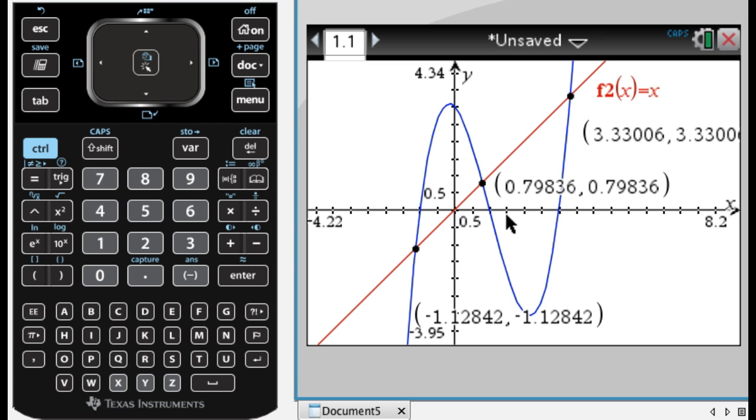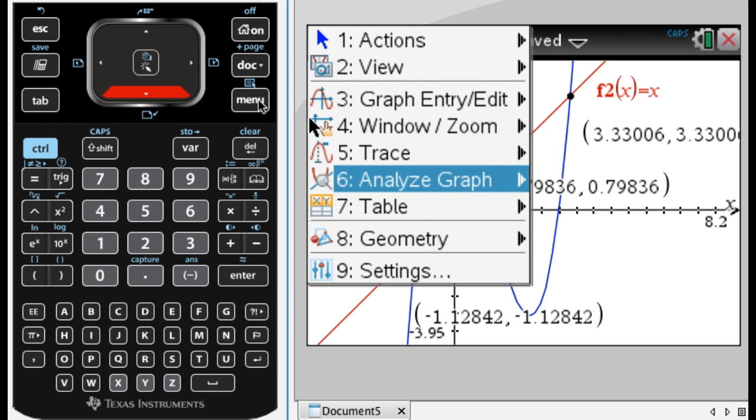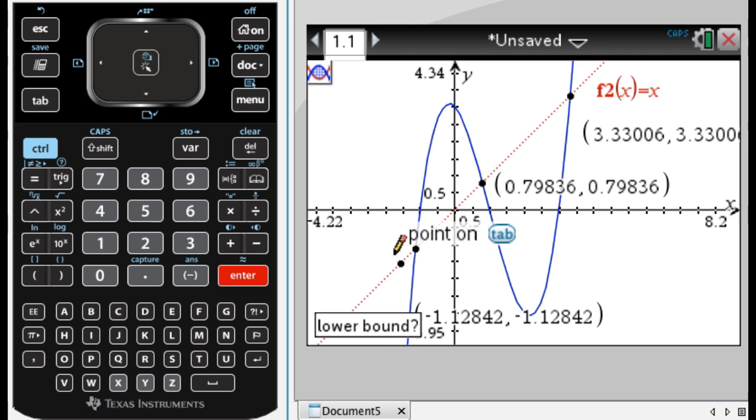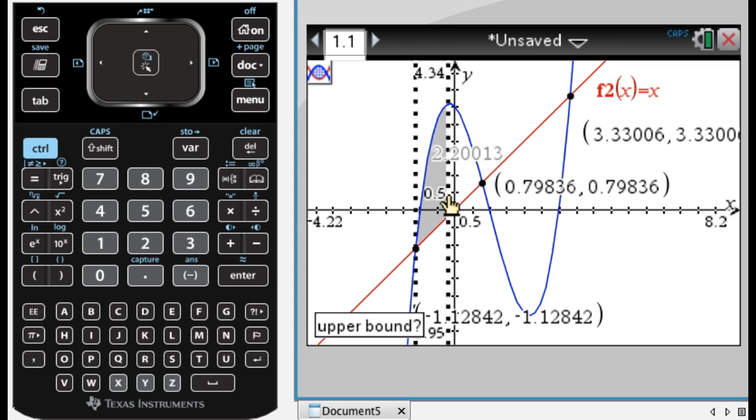Now that I've done this, I want to press menu and go to analyze graph. Option 8 is now bounded area instead of analyze conics. I'm going to click that, move the cursor until I'm on this point and click it for a lower bound. It will find the area bounded between the two curves on this interval, so I'll click again.